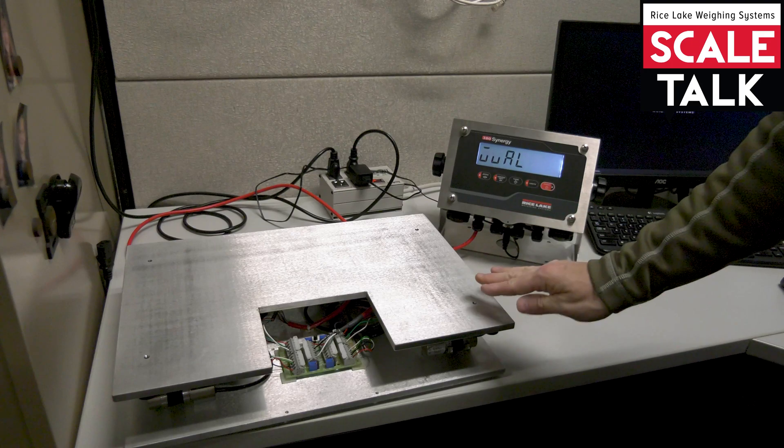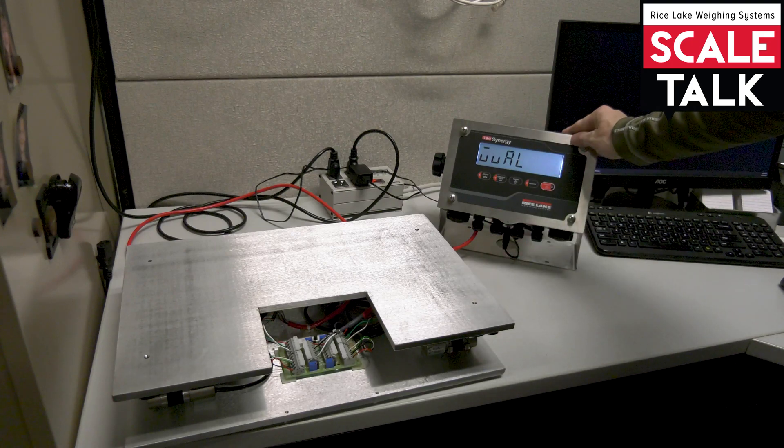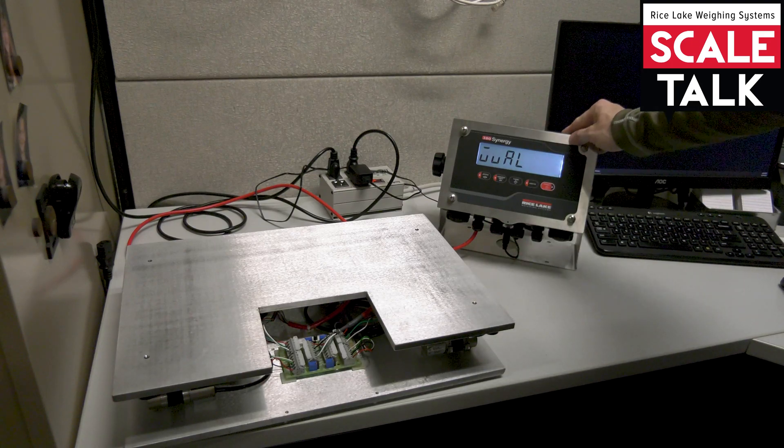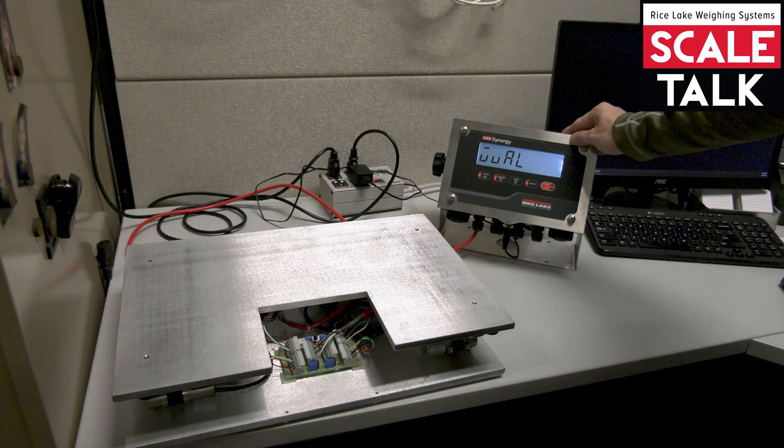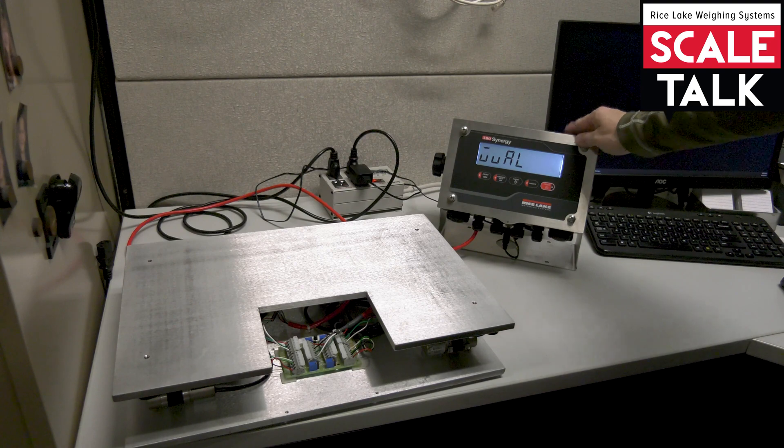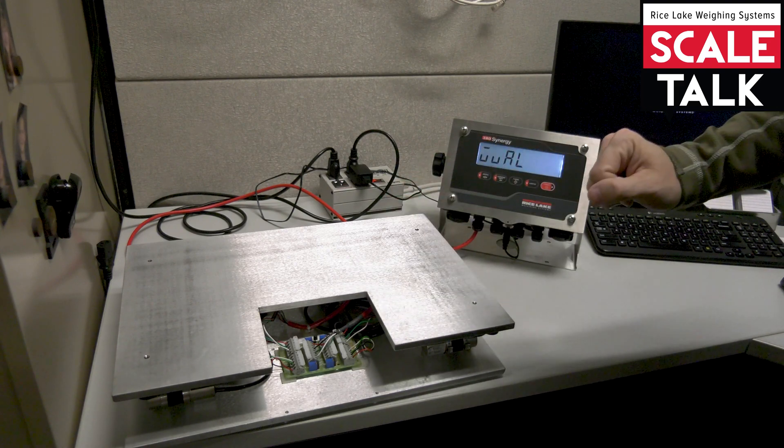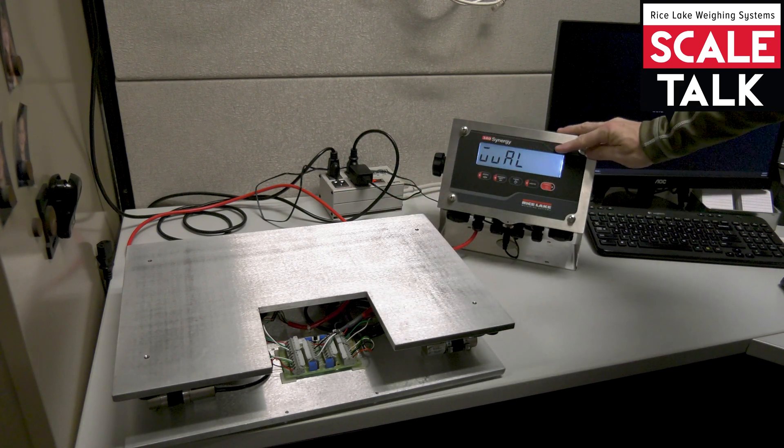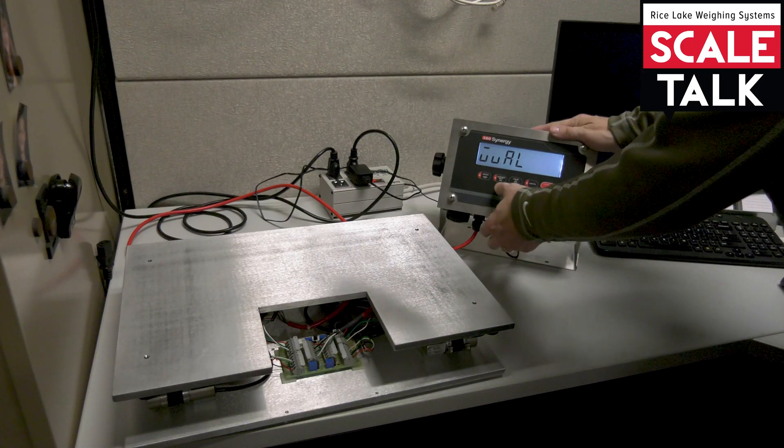So we just set this up to be a 50 pound scale. Hamburg 44 would recommend that anything under 300 pounds should use full capacity for the calibration. So we're going to go ahead and put 50 pounds on the scale for that calibration. So we'll have to tell the indicator how much we're going to use. So let's come down.